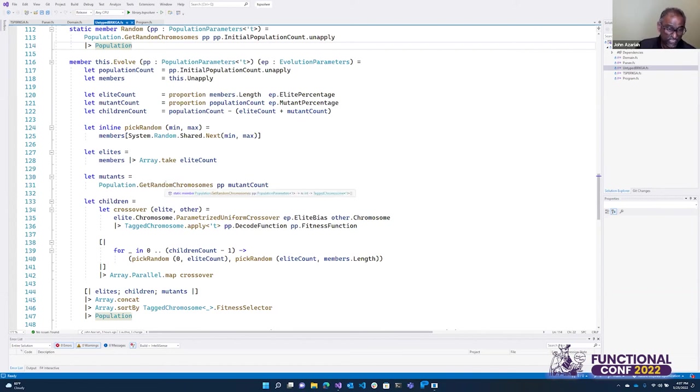This is basically introducing the new population. And here, what we do is do a parameterized uniform crossover with a bias towards the elite parent, and you pick the elite parent and the other parent, and you go off and you create this child.